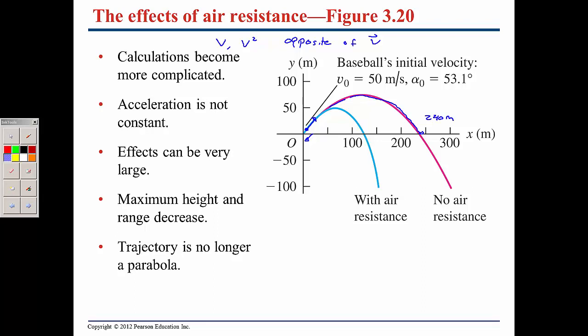If you consider a ball thrown without air resistance — the magenta line — it's going to go to about 240 meters. With air resistance, the ball starts slowing down, doesn't go as high, and since air resistance acts in both the x and y directions, it won't go as far — maybe only 125 meters. That's a difference of over 100 meters, based on typical values for a baseball.